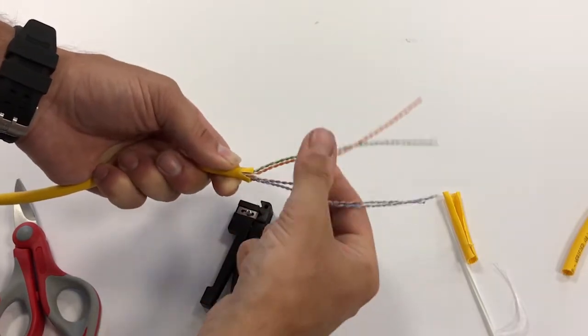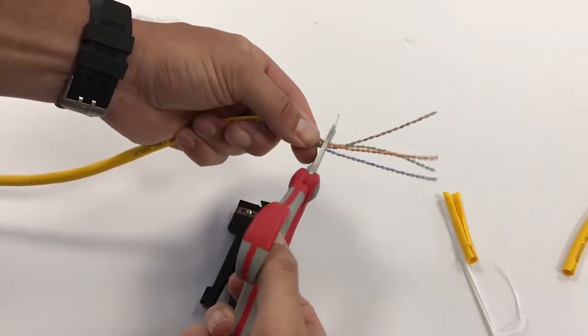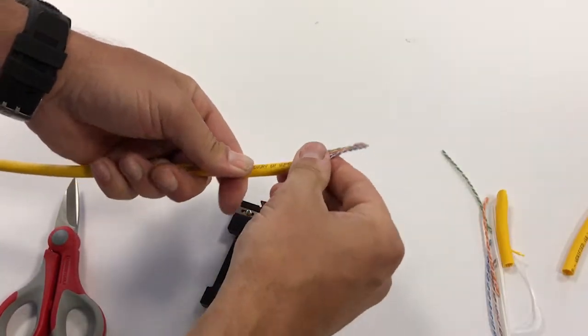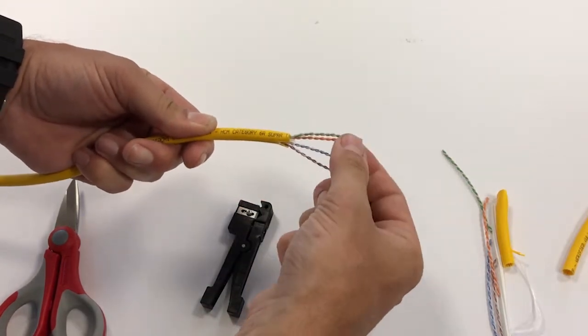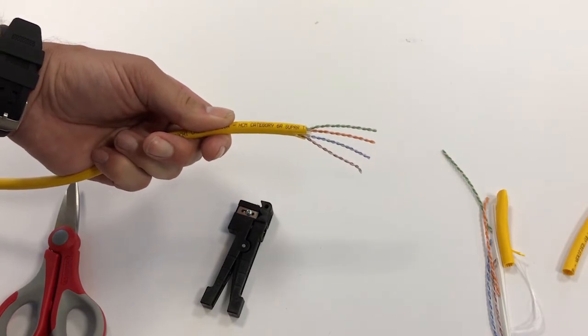And to make it easier to work with, I'd also recommend cutting the four pairs below where you used the ringer. Now you have four pairs and the cable is ready for termination to any category 6A UTP jack. Thank you.